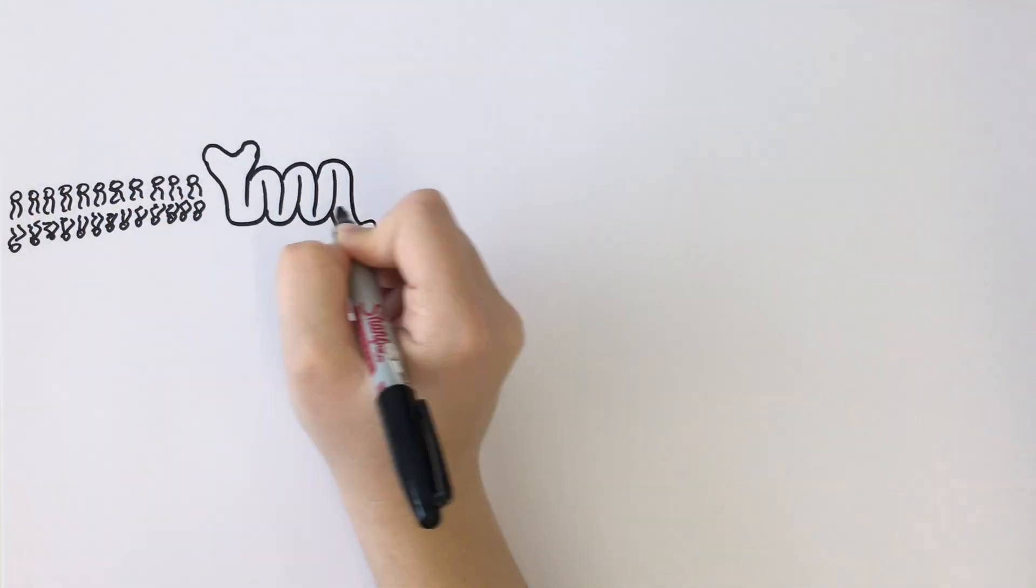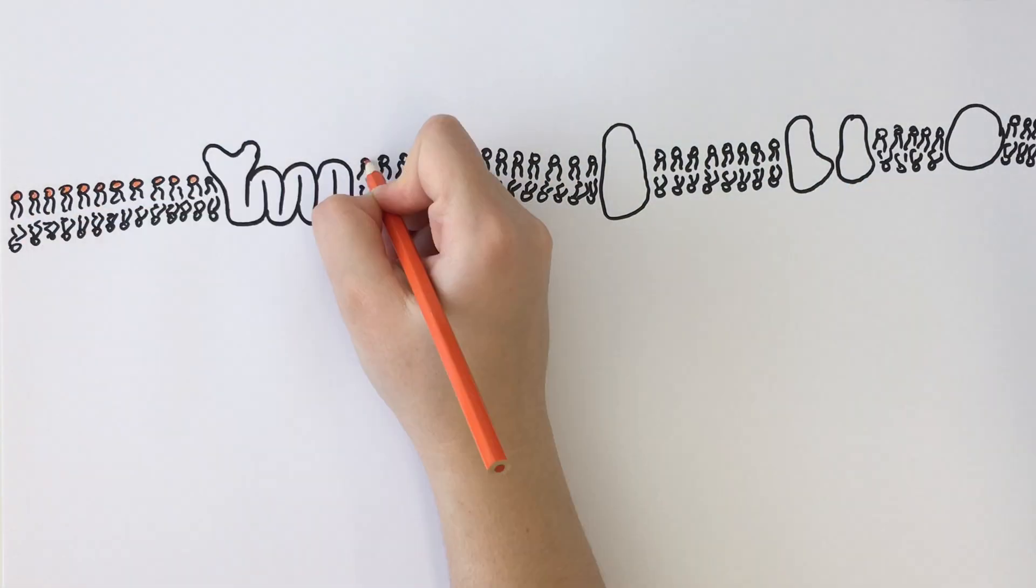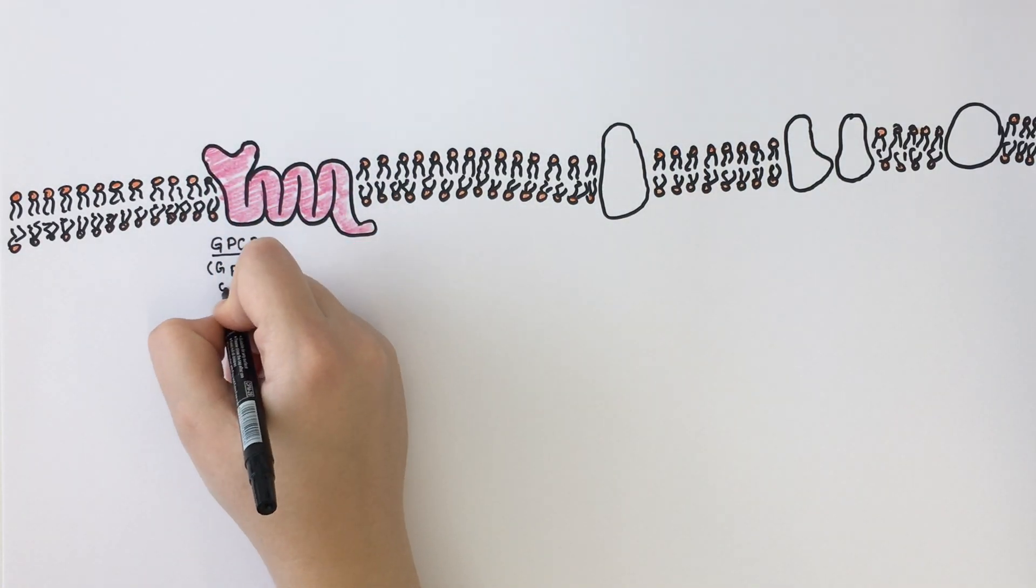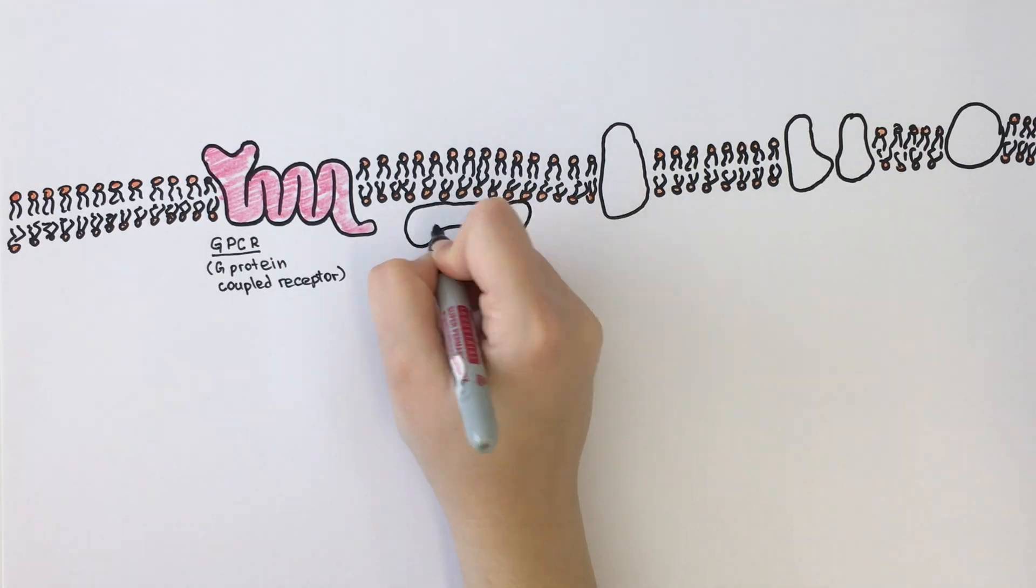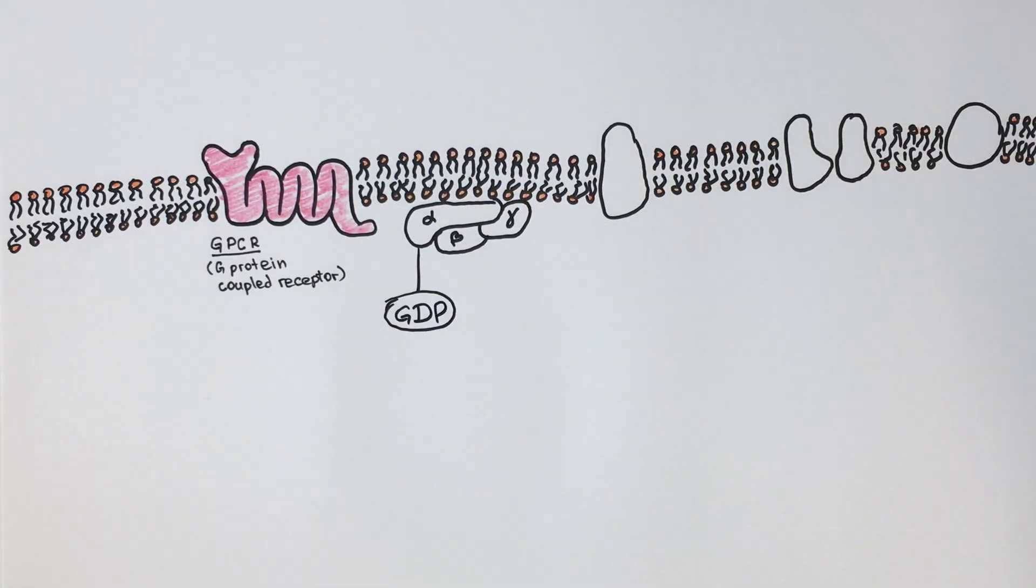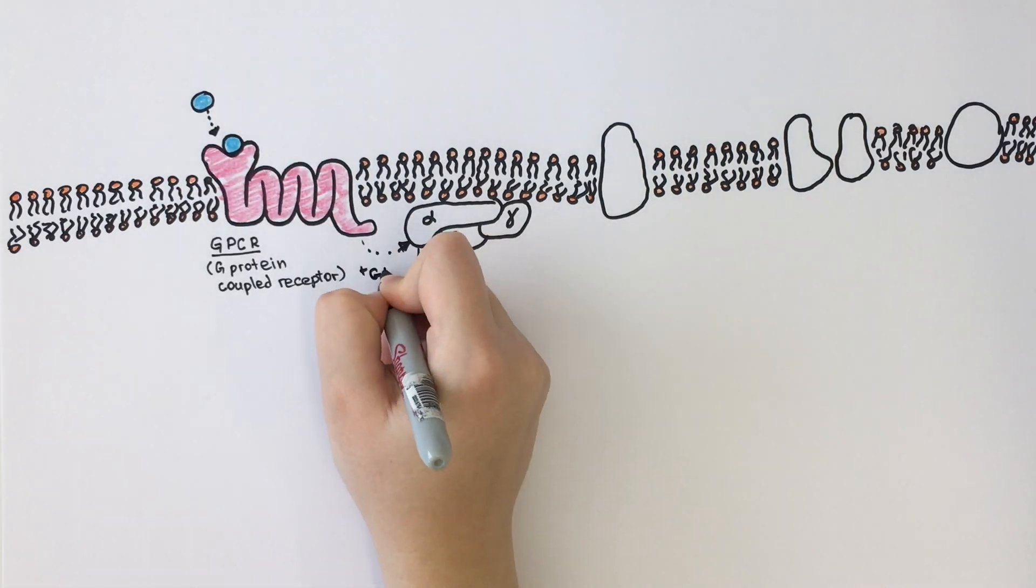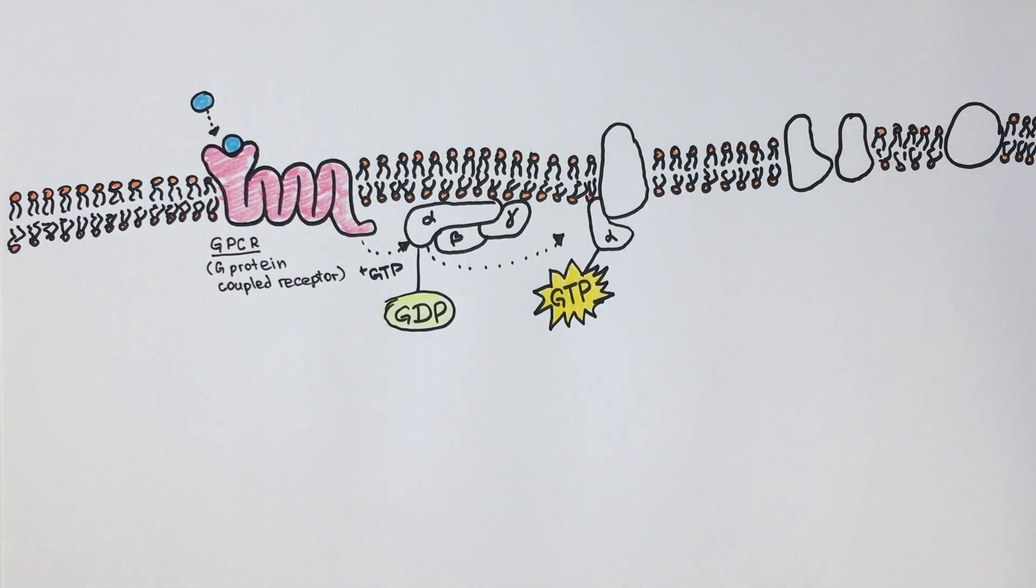To understand how G-proteins work, let's take a look at the epithelial cell's membrane. The G-protein-coupled receptor is coupled with the heterotrimeric G-protein, with its alpha, beta, and gamma subunits. In its inactive state, a GDP is bound to G-alpha, and once a ligand binds to the receptor, the GDP is replaced with a GTP, and the G-alpha subunit separates.